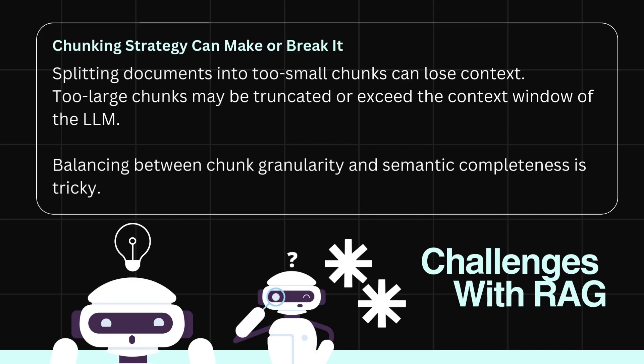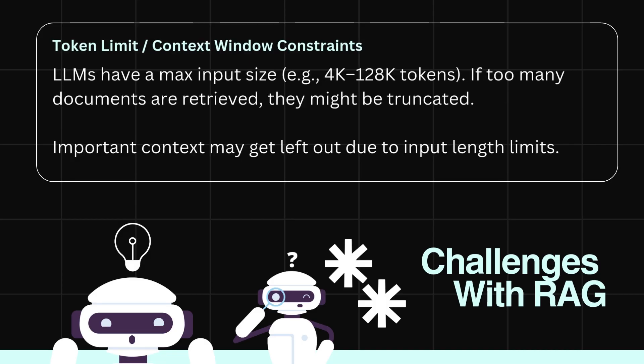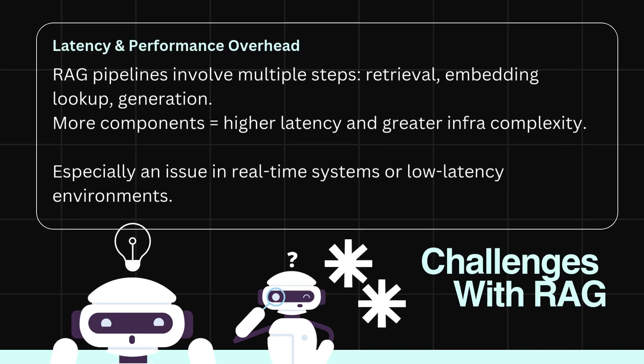Second, chunking strategy can make or break it. Splitting documents into too-small chunks can lose context, while too-large chunks may be truncated or exceed the LLM's context window. Balancing chunk granularity and semantic completeness is tricky. Third, token limit and context window constraints mean LLMs have a max input size — for example, 4K or 128K tokens — so if too many documents are retrieved, they might be truncated and important context may be left out.